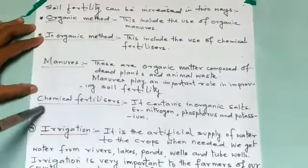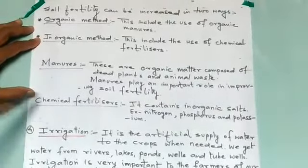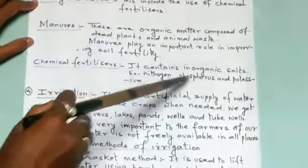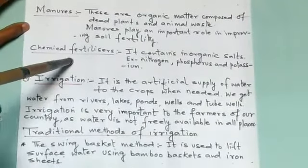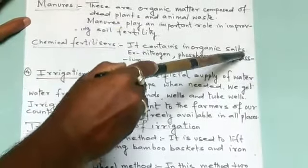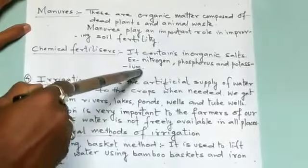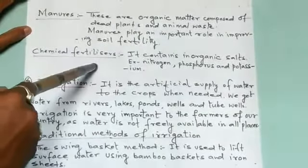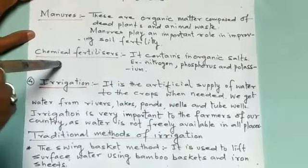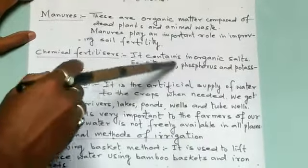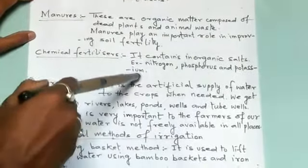Next is chemical fertilizer. Chemical fertilizer contains inorganic salts, for example nitrogen, phosphorus, and potassium. So the two methods to improve soil fertility are: manure and chemical fertilizers.